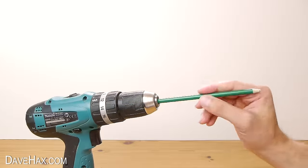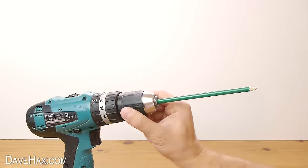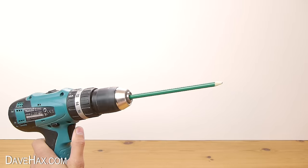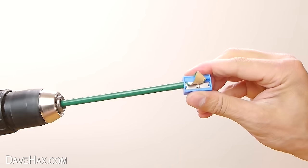You can just put a pencil in the drill, start rotating it and push the sharpener onto the end.